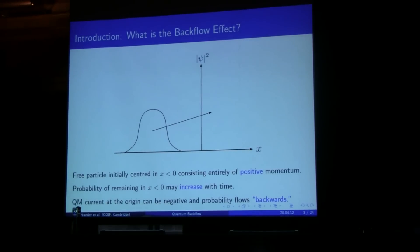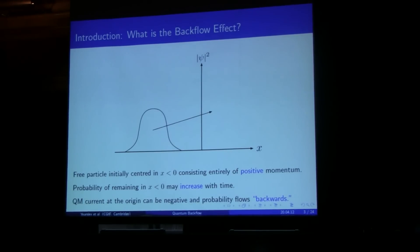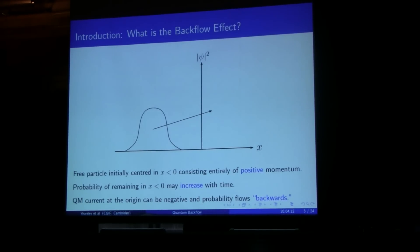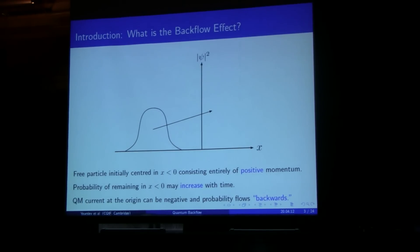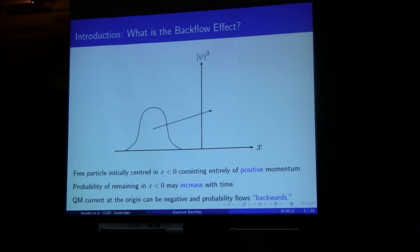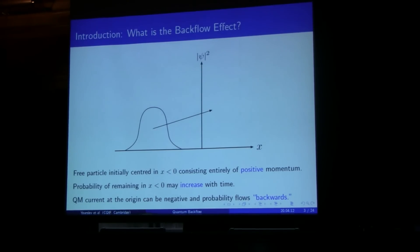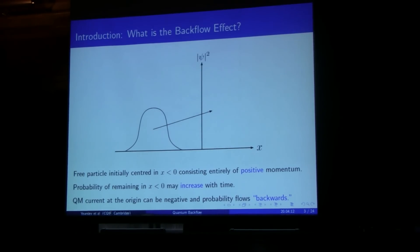So what is this backflow effect? Here's a simple explanation. Imagine that I initially have some quantum state that's constructed entirely out of positive momentum, and imagine that at some initial time it's concentrated in x less than zero. Then what I'm interested in is the probability of finding the state still in x less than zero at some subsequent time. Now your classical intuition says this is made entirely out of positive momentum, therefore it should be flowing to the right, therefore this probability should decrease in time — it should be monotonically decreasing. In fact, that isn't true. In some situations this probability can increase in time, or to put it another way, the standard quantum mechanical current at the origin can be negative, so this probability flows backwards in the wrong direction. And this is where the name backflow effect comes from.